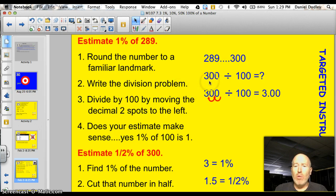And then, I wrote this division problem, 300 divided by 100, because I want to know what 1% is. And there are 100% total. So, if I divide 100, 300 divided by 100, when dividing by 100, I just move the decimal two spots to the left, 1, 2, and I get 3.00, or 3.